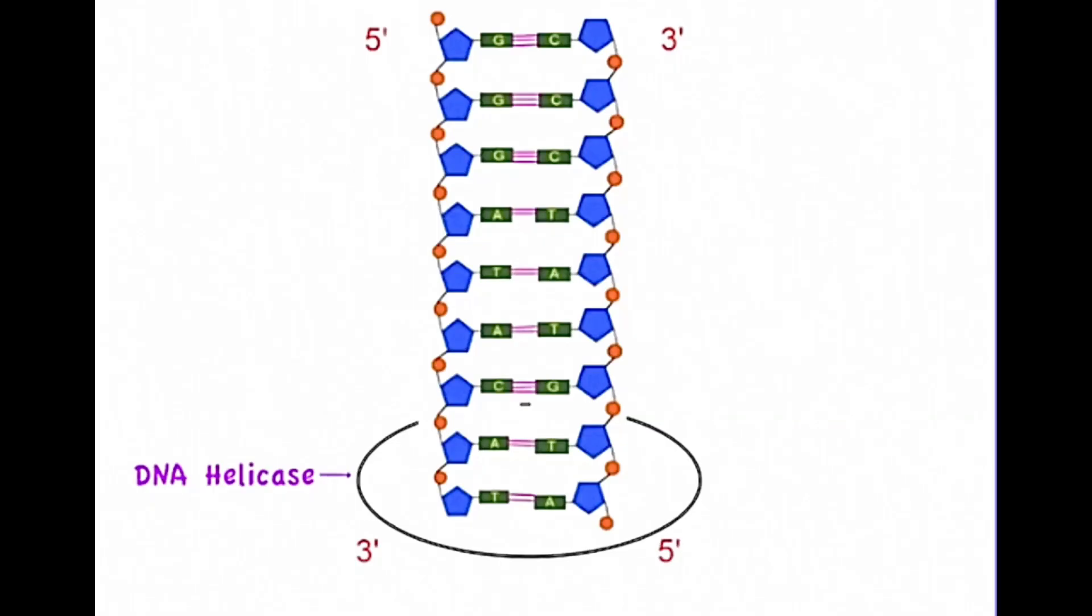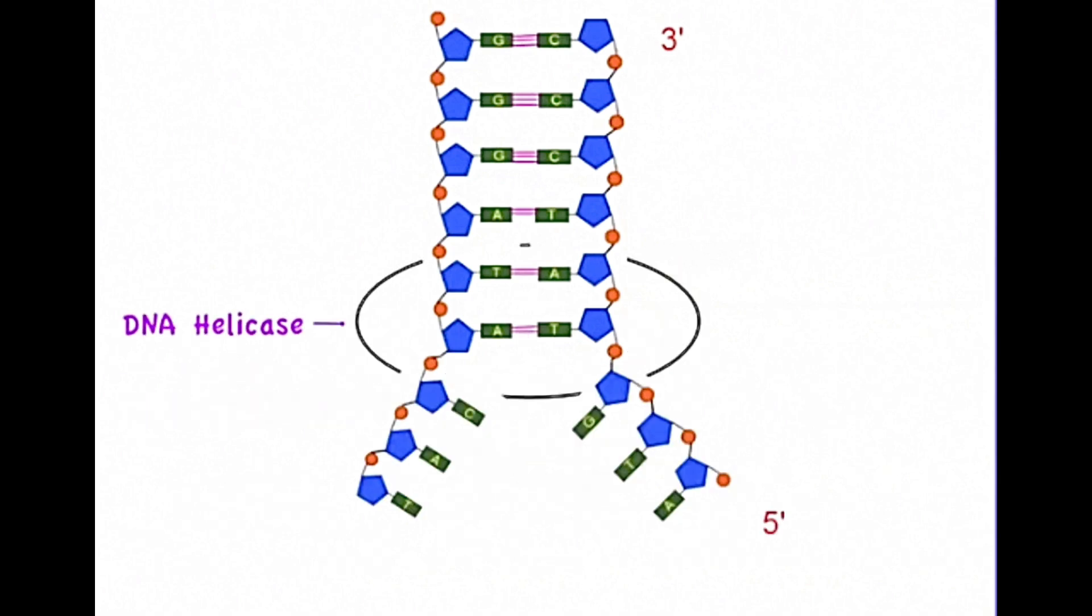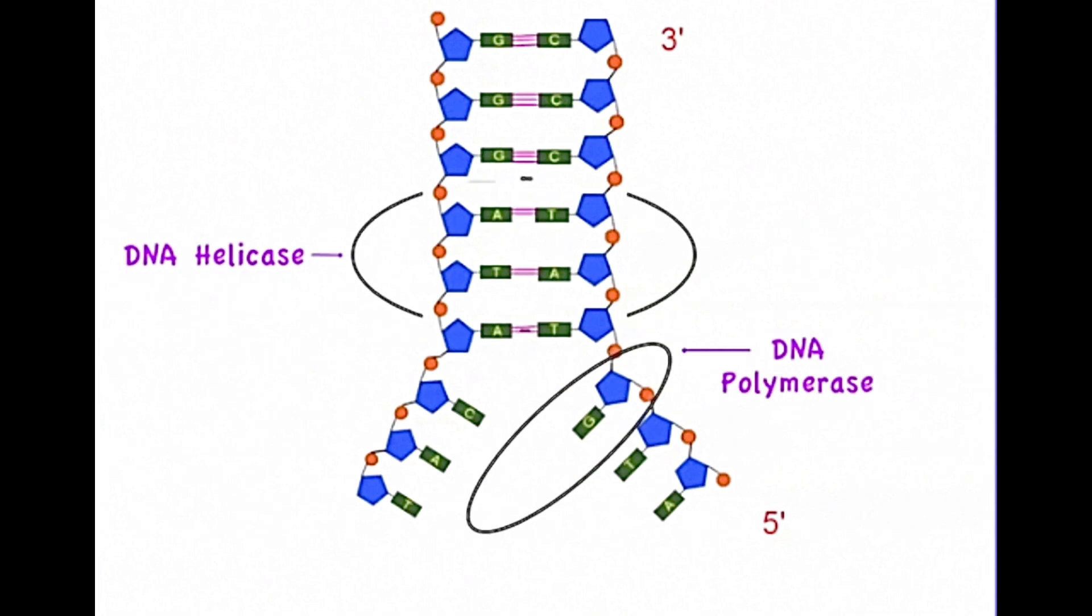Now let's look at the other side of the original DNA strand. We call this the lagging strand. In the same way as before DNA helicase unwinds and separates the two strands by breaking the hydrogen bonds. DNA polymerase also as before adds complementary DNA nucleotides.